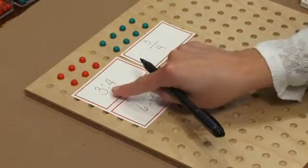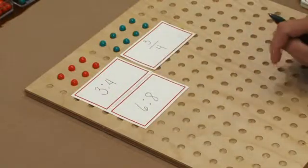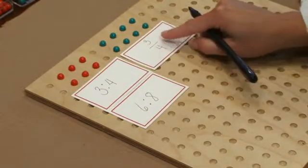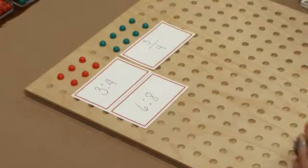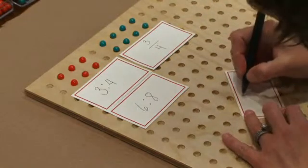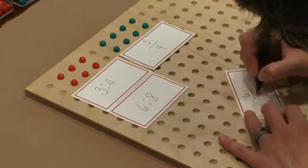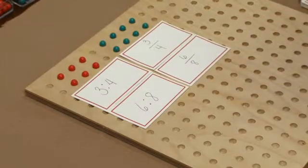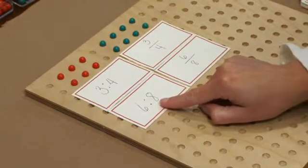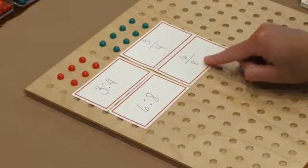So we have the ratio written as three to four here, and that's also equal to three-fourths. For the second one, we have six to eight, or six-eighths.